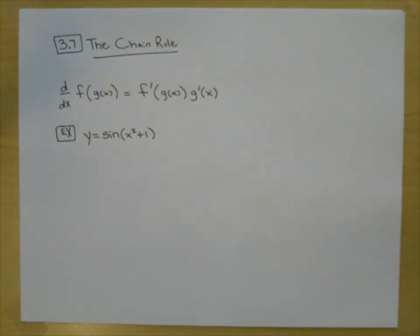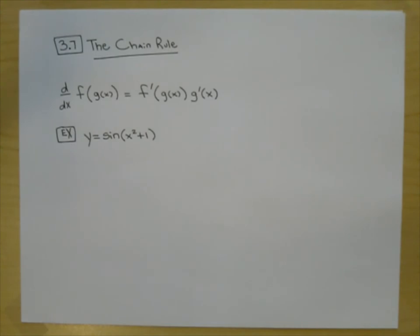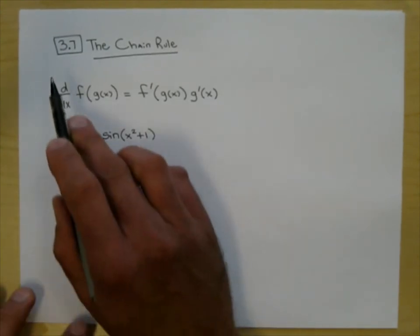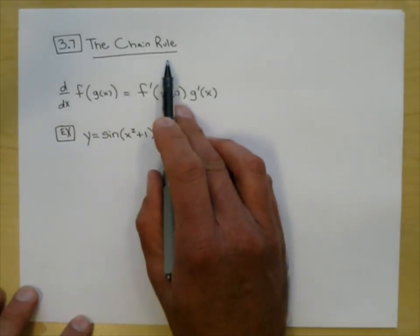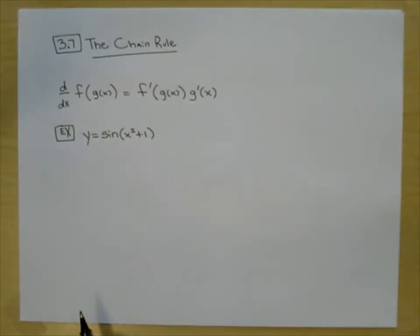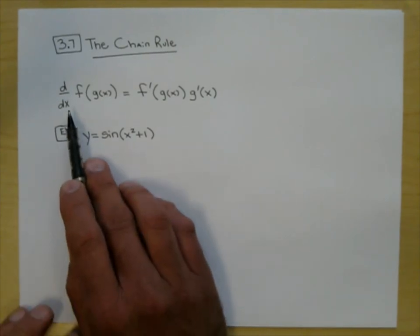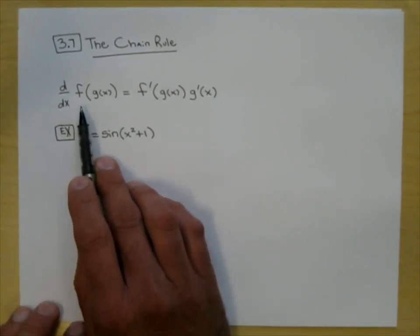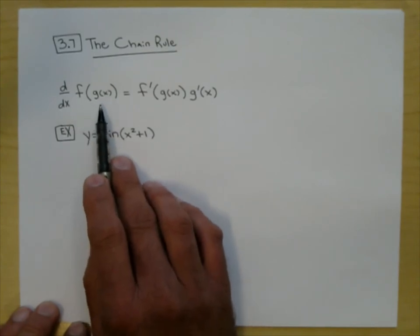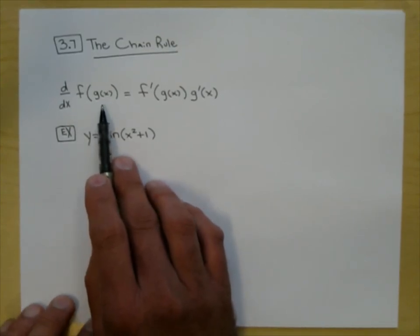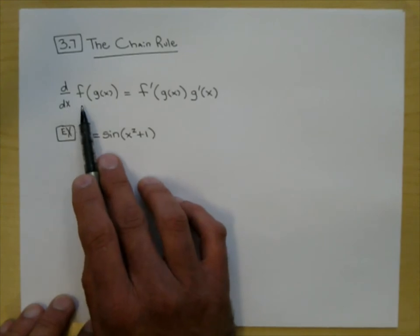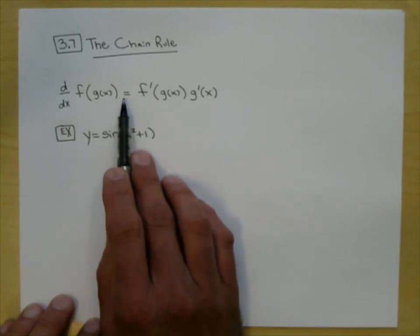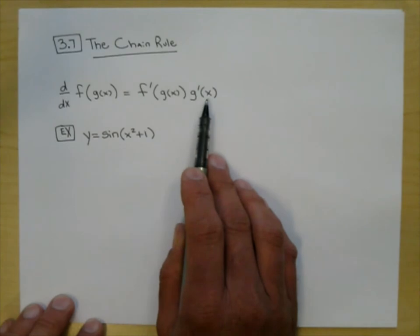Math 265A, Cuesta College. I'm Joe Vasta. Today we are covering section 3.7, the Chain Rule. The Chain Rule describes the derivative of a composition. The derivative of f of g of x equals f prime of g of x times g prime of x.